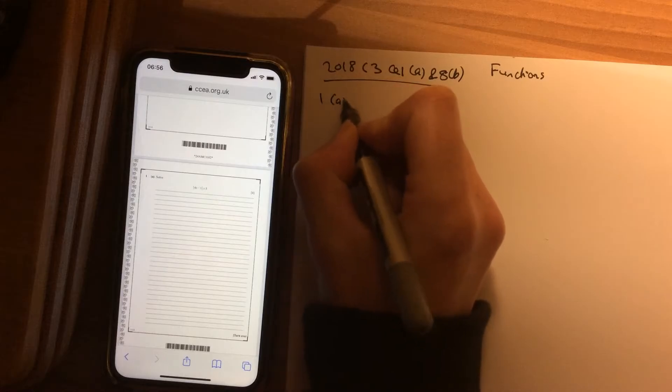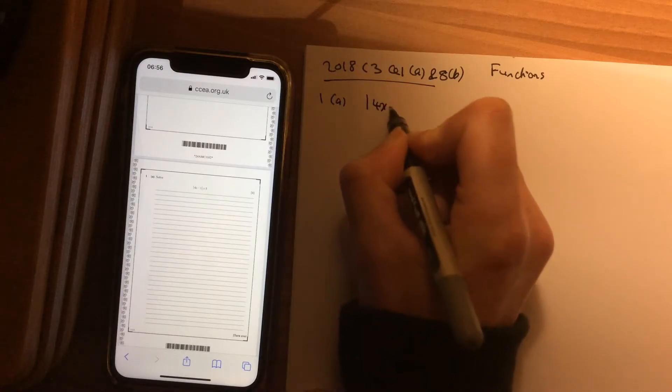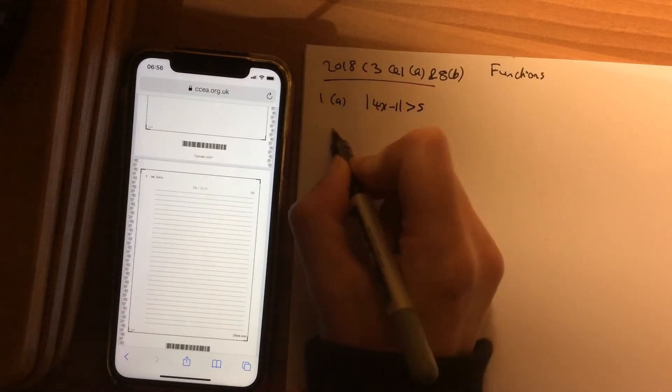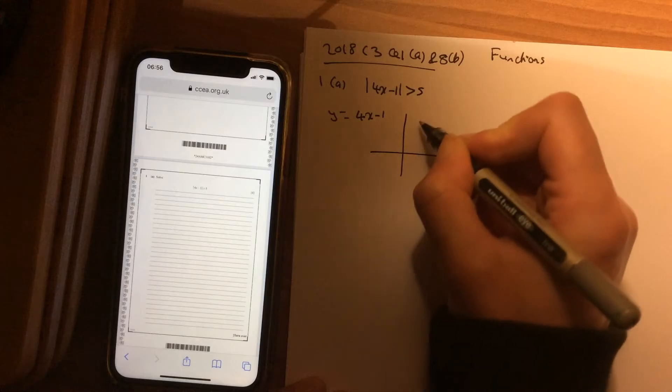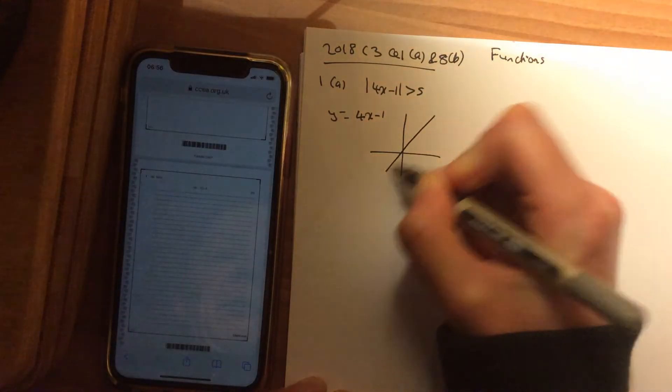So question 1a, it says solve |4x - 1| > 5. So I am going to do it through graphs as normal. So I am going to look at sketching y = 4x - 1. That is your y = x graph.